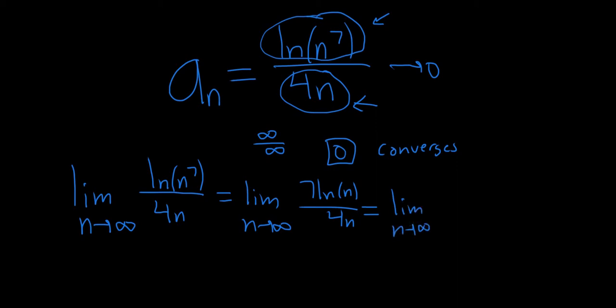So let's do that. The 7 hangs out, and the derivative of ln(n) is 1 over n. So you get 7 times 1 over n. In the denominator, the derivative of 4n is simply 4.